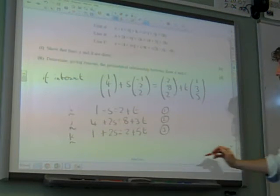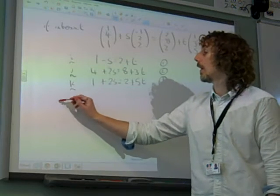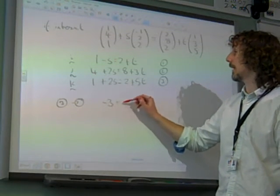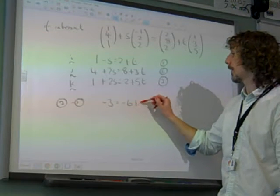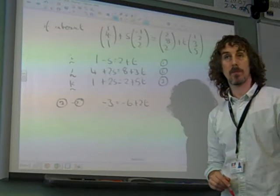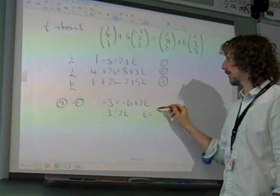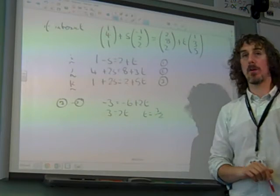Equation 3 minus equation 2 gives me minus 3 is minus 6 plus 2T, so 3 equals 2T, so T is 3 over 2.